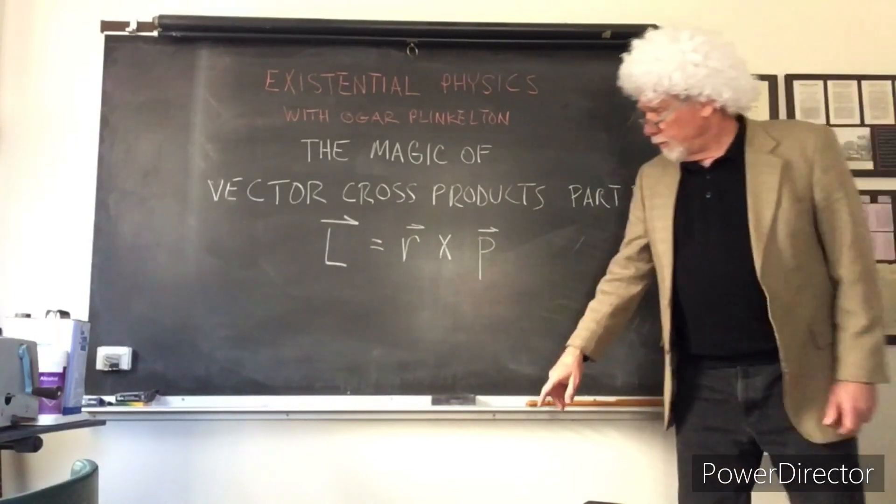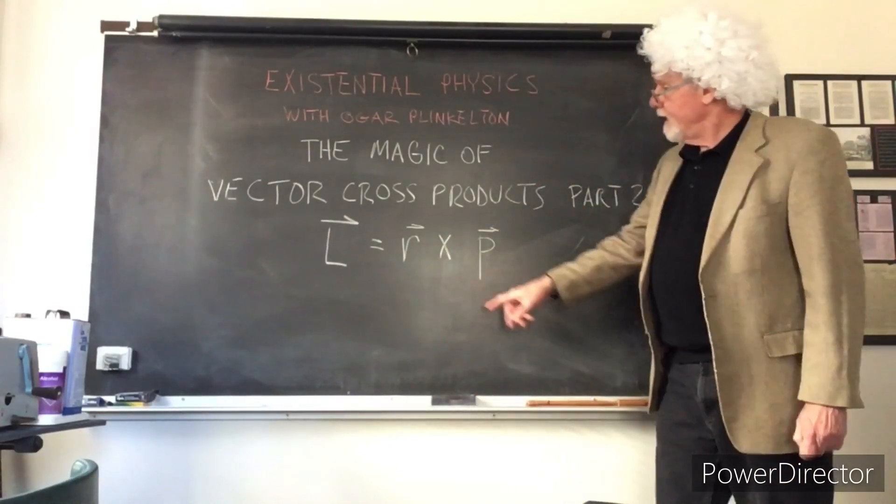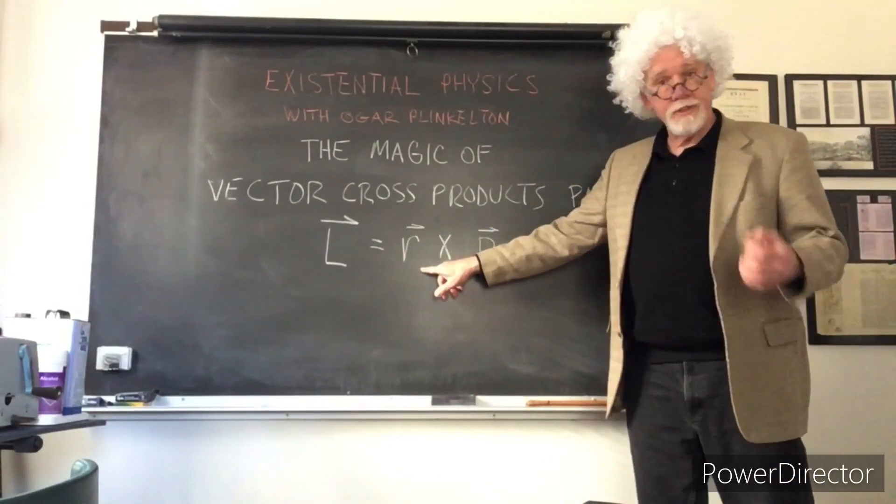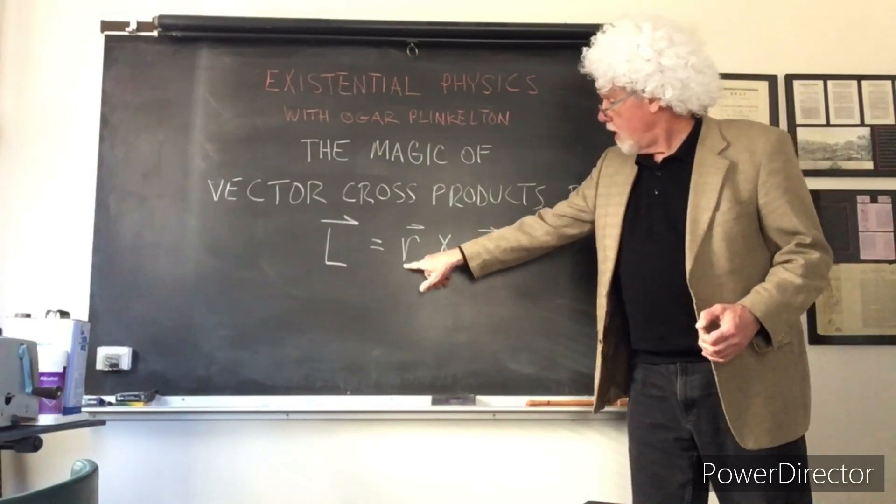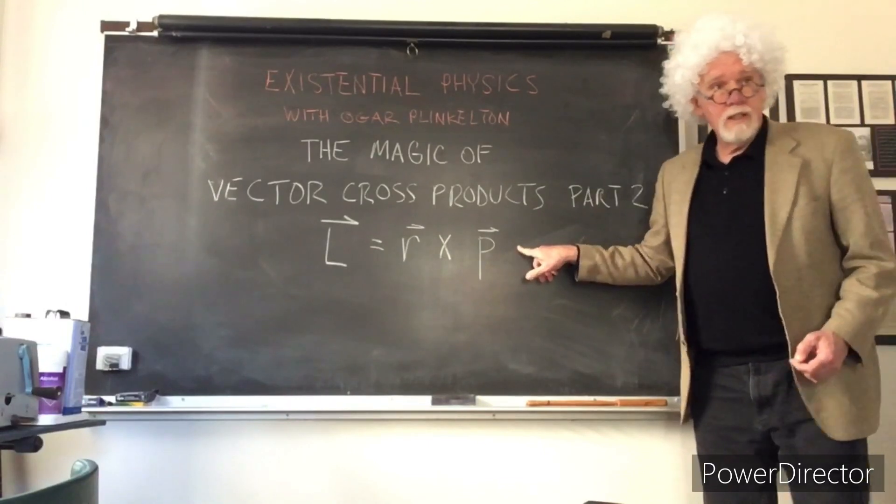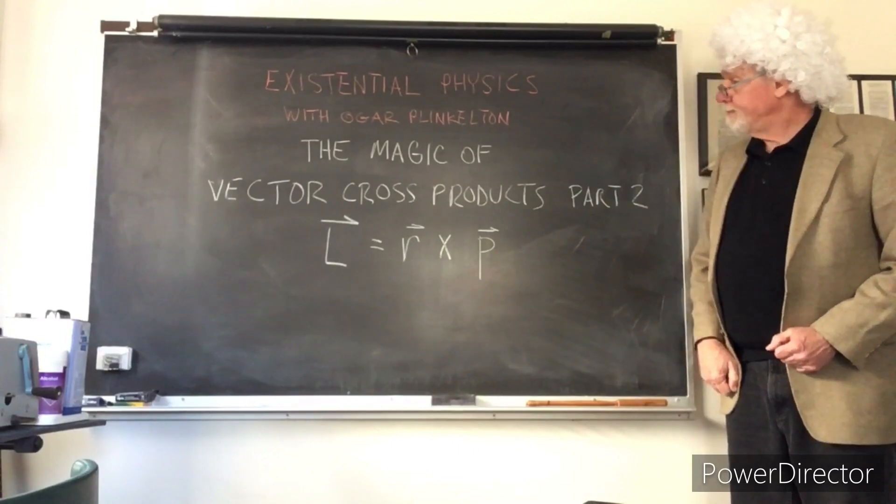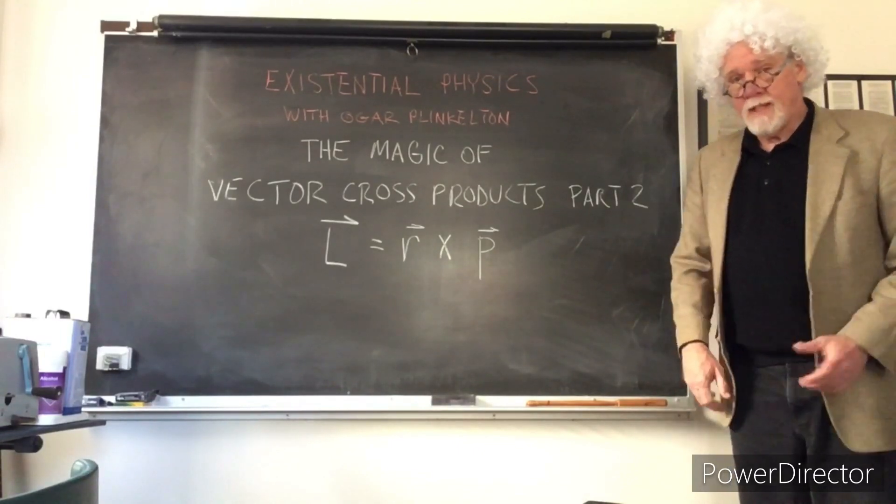Part two is going to deal with angular momentum and the cross product. Here the distance from the center of rotation R crossed with the linear momentum of a moving body, and we're going to see how that manifests itself.